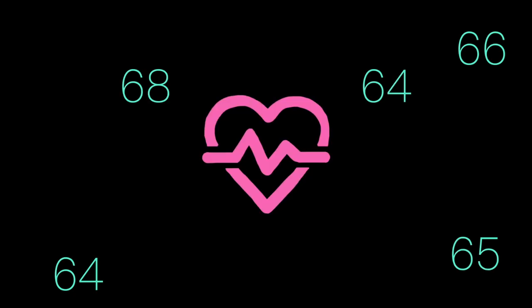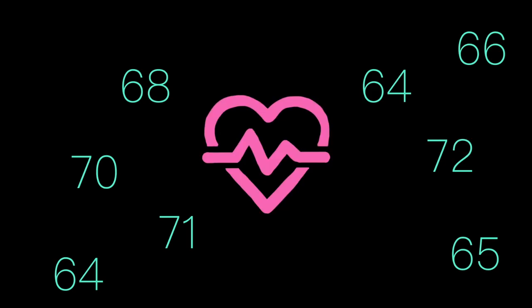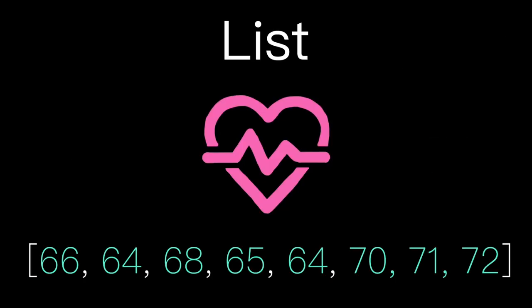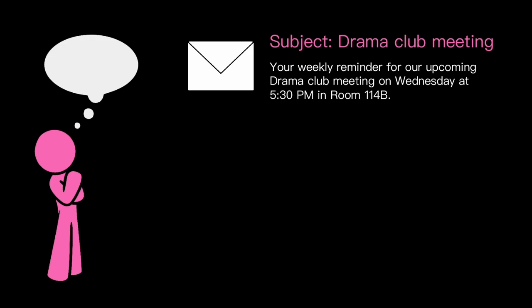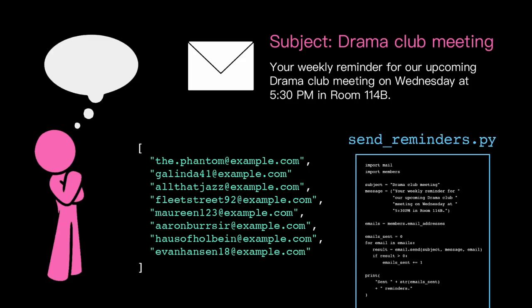A list is a type of data structure. Data structures allow us to organize and access data efficiently. Like functions organize our code, data structures organize our data. So, what tedious digital tasks clutter up your everyday life? Think about the data that that task operates on. With the power of our first data structure, lists, you might just be able to automate that task for good by writing a script.